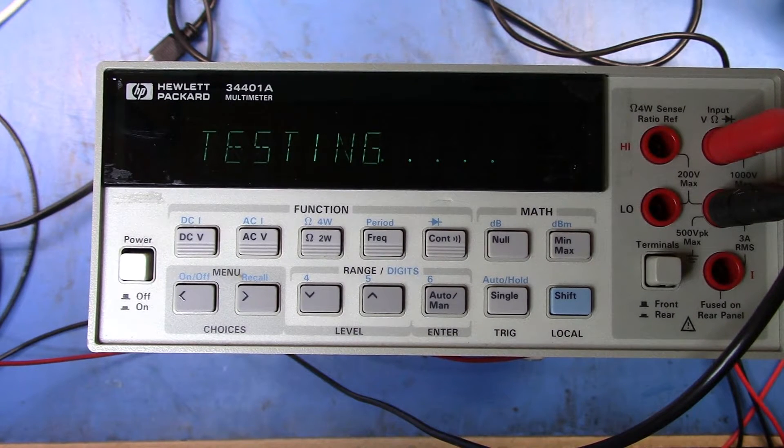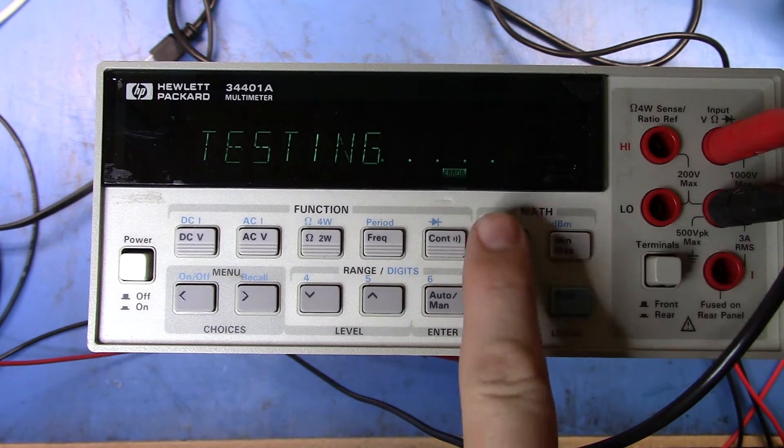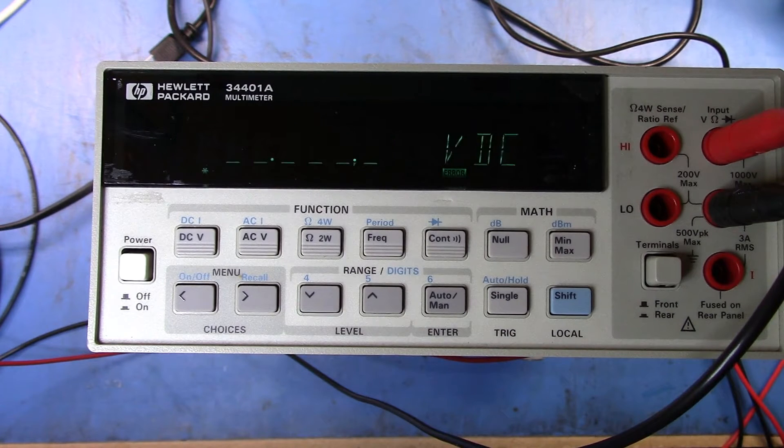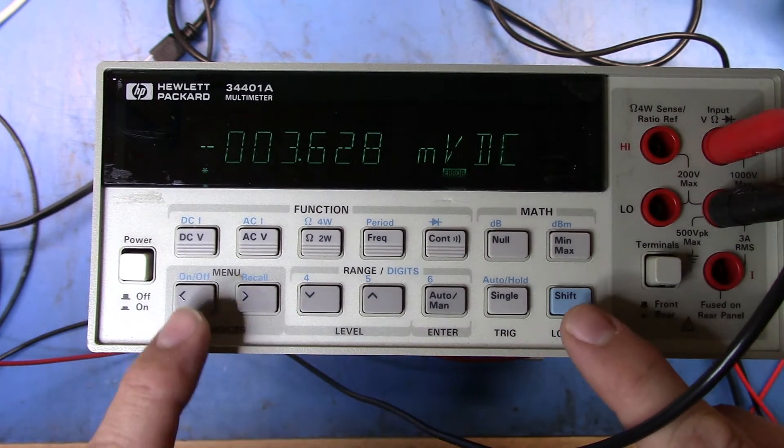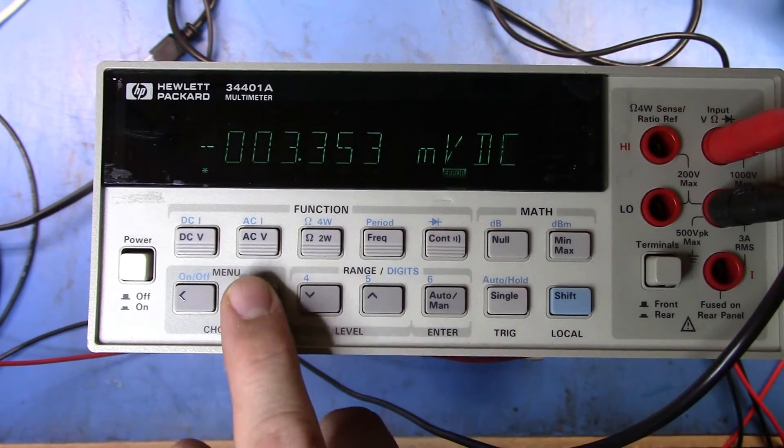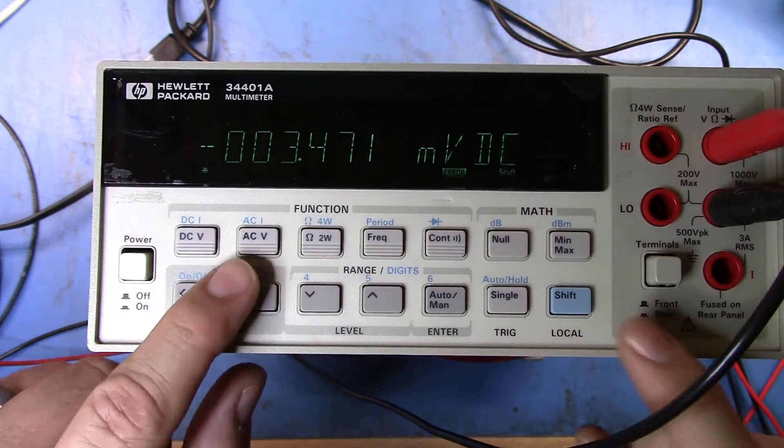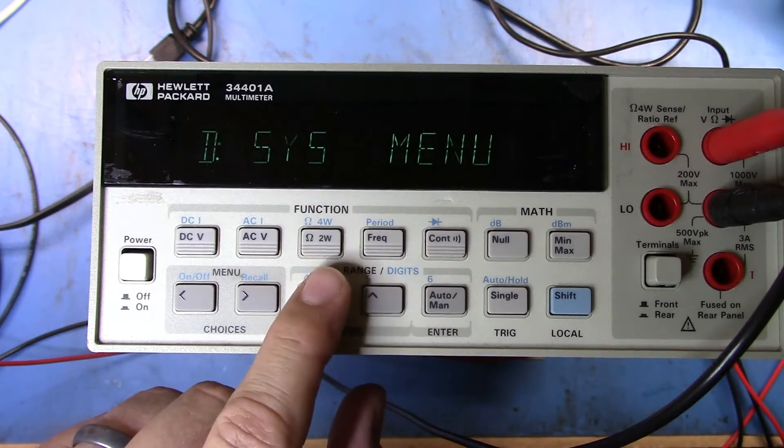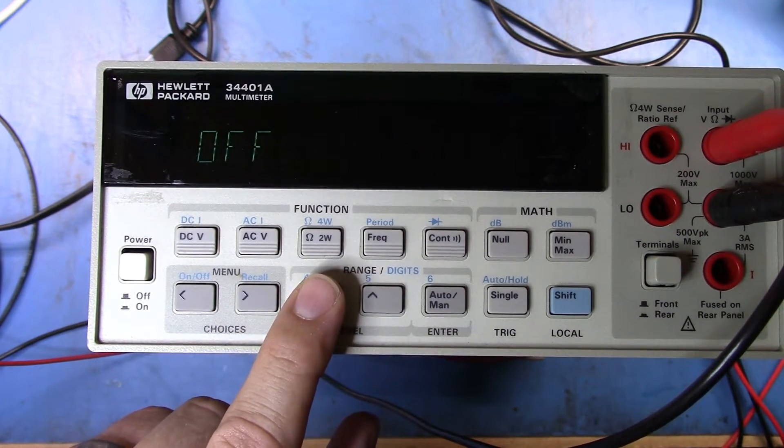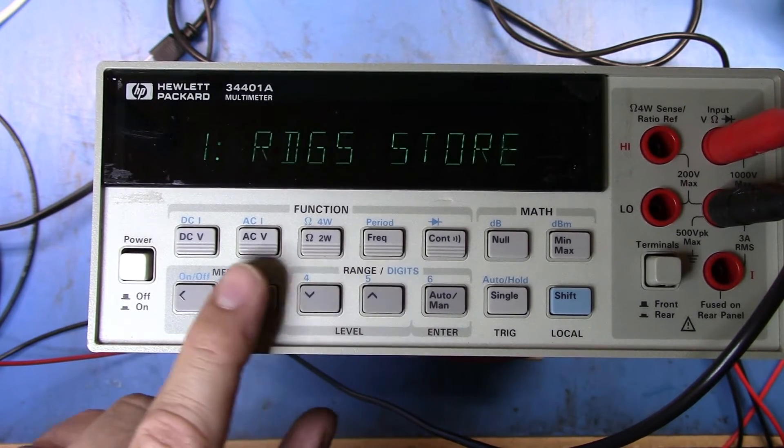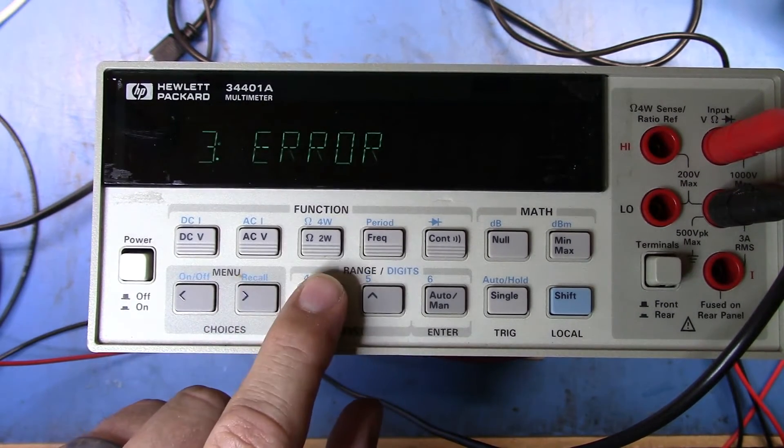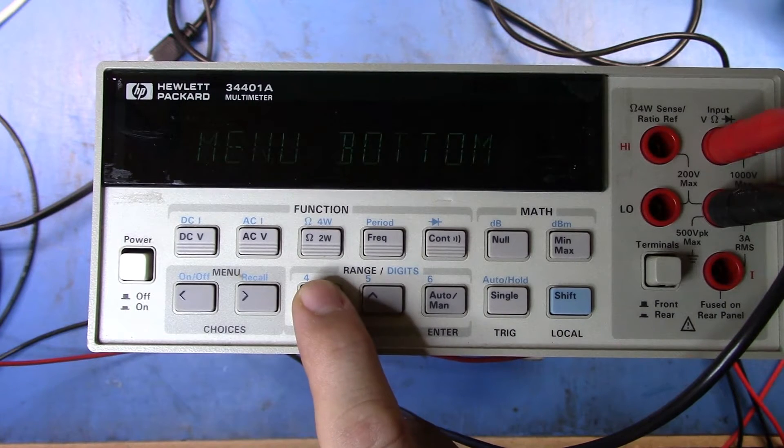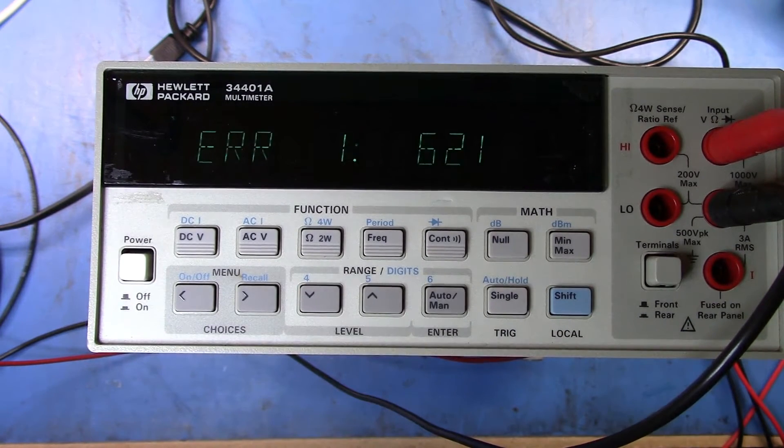You can hear the relays clicking. And it's telling us that there's an error. Let's wait until that comes up. And then now I can get menu, math, system. Let's go into the system menu. I want to go up to the system menu, error. Let's go there. And so, we're getting error 621. Let's see if there's any other errors. Nope. So, error 621.